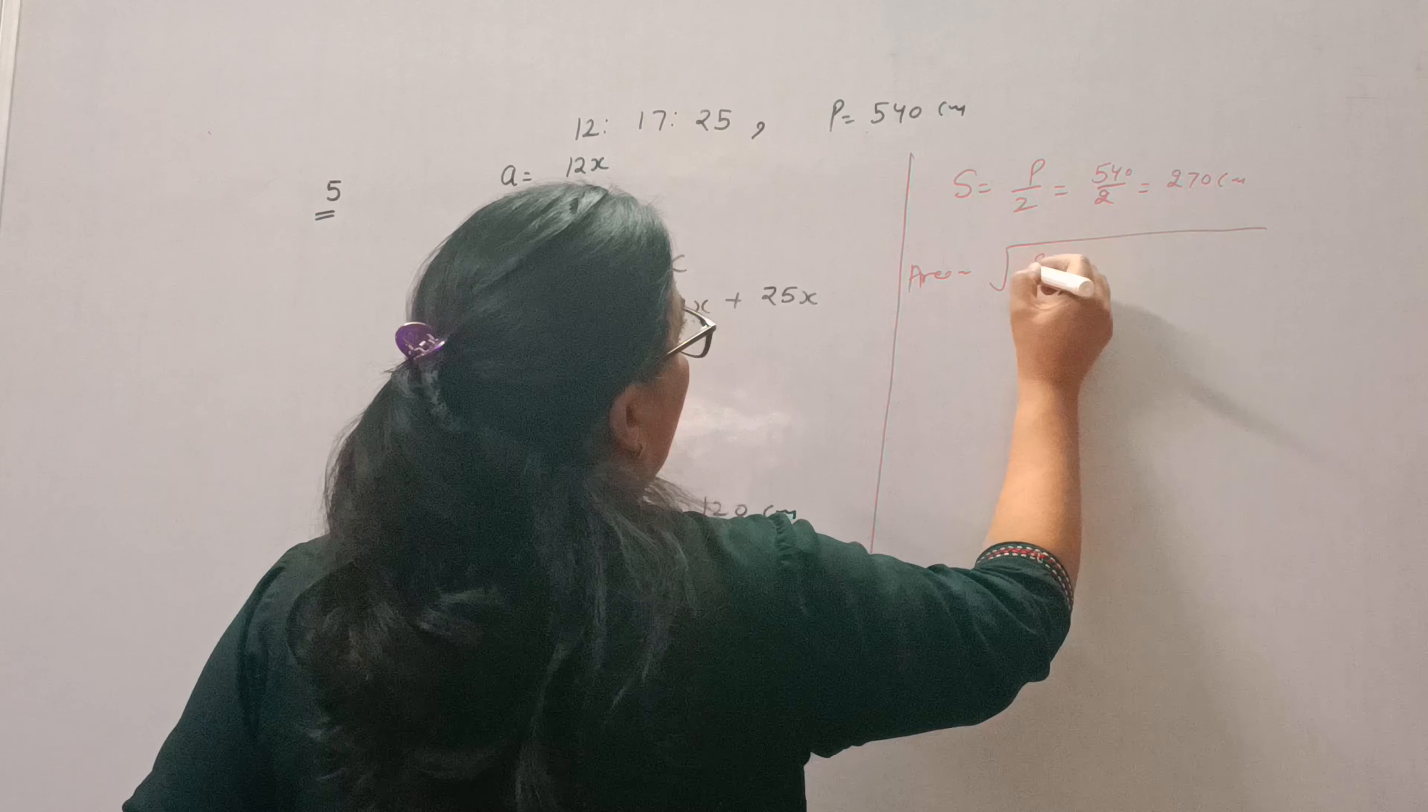That is square root, S times S minus A times S minus B times S minus C.